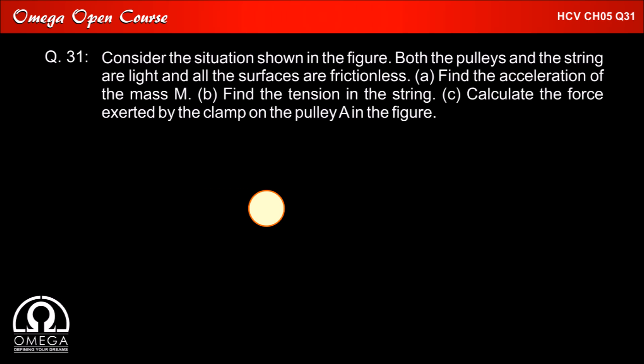For part c, let us look at the free body diagram of the pulley. The pulley is being pulled by this string in vertically downward direction and towards left with tension T and the clamp is applying some force say f on it. Since the net force on massless pulley is always 0, f must balance the resultant of both the tensions.